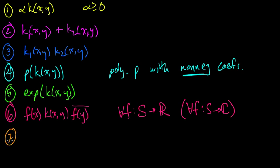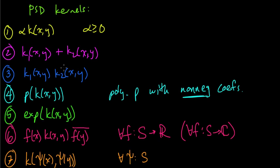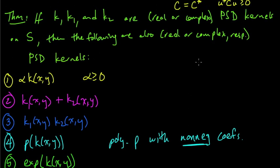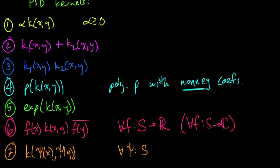And seven says that if we pre-compose k with some map ψ—in other words, we take k(ψ(x), ψ(y))—this is a kernel for any map ψ from... so far all our x's and y's have been in S. Now we're going to have a slight change of notation: the x's and y's are in some S', and ψ maps us into S. So k is still a kernel on S as we originally defined it.